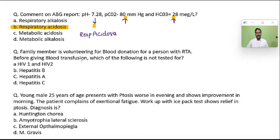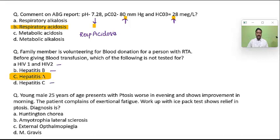A family member is volunteering for blood donation for a person with a road traffic accident. Before giving transfusion, which of the following is not tested routinely? We test HIV1, HIV2, HBV, hepatitis B, and hepatitis C. Hepatitis A is generally not tested because hepatitis A is feco-oral — it is not blood borne.